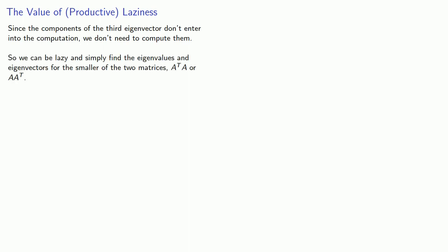And at this point it's probably worth mentioning the value of productive laziness. Since the components of the third eigenvector don't enter into the computation, we don't need to compute them. So we could be lazy and find the eigenvalues and eigenvectors for the smaller of the two matrices, A transpose A or A A transpose. But if we put some effort into our laziness, we can find out something very interesting, and we'll take a look at that next.